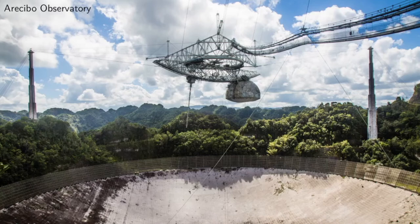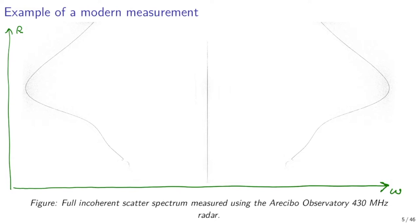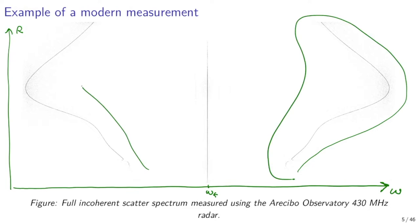I will now show an example of a measurement of the incoherent scatter spectrum using the Arecibo Observatory 430 MHz radar, shown in this picture. This plot shows scattered power as a function of frequency and range. In the middle of the plot, you can see the ion line, roughly centered at the radar transmit frequency, omega_f. To the right and left of the ion line, you can see the upshifted and downshifted plasma lines. The range resolution of this measurement is 300 meters, and the frequency resolution roughly 2 kHz.